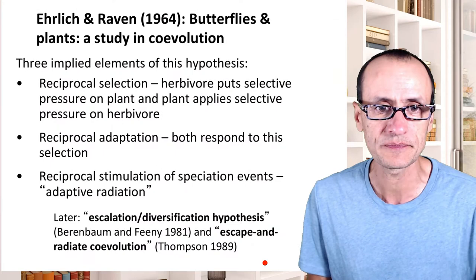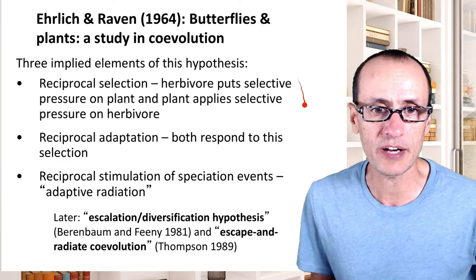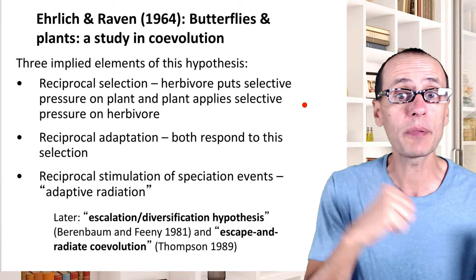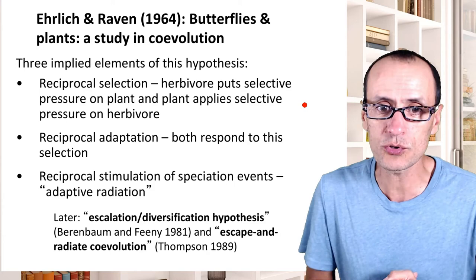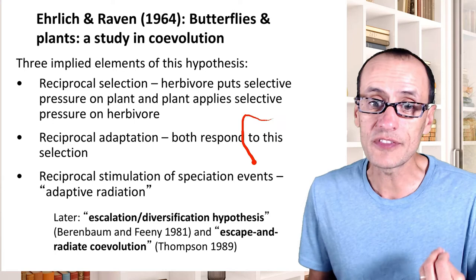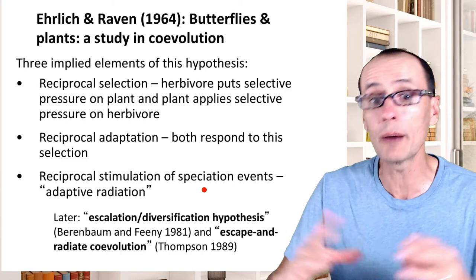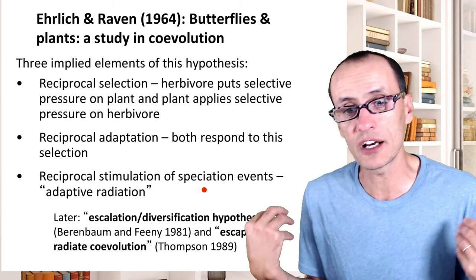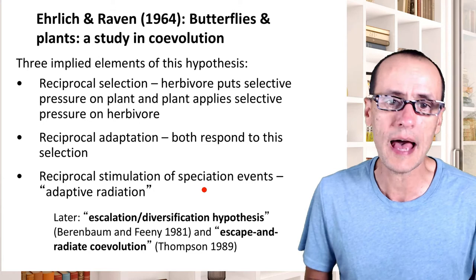Ehrlich and Raven implied a couple of different elements in this hypothesis: that there was reciprocal selection — herbivore puts selective pressure on the plant, and the plant applies selective pressure on the herbivore. That is the core strict definition of co-evolution: reciprocal adaptation, where both partners respond to each other's selection pressure, and that there's stimulation of speciation events. The mechanisms of adaptive radiation are where the arm-waving actually happens.